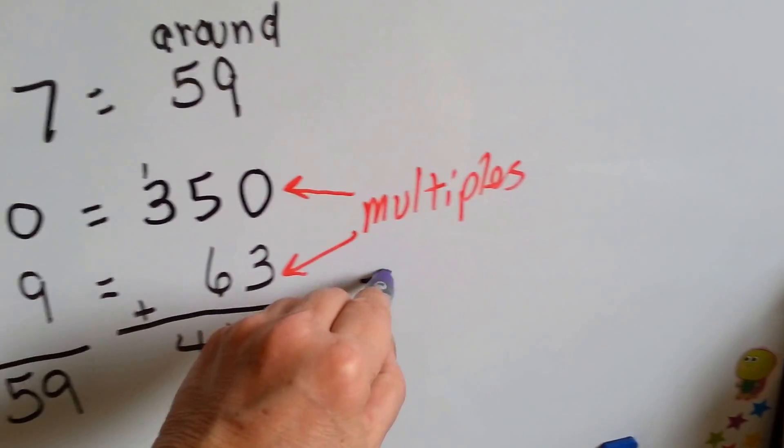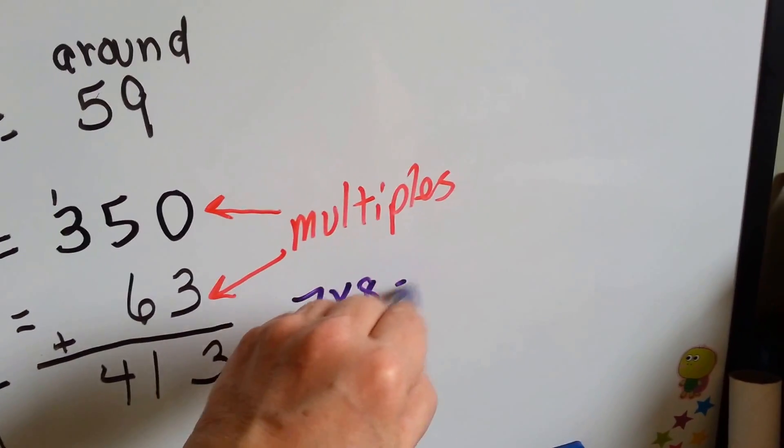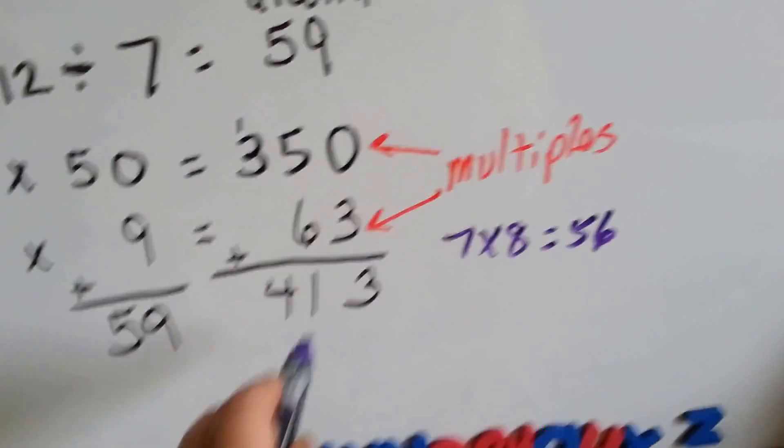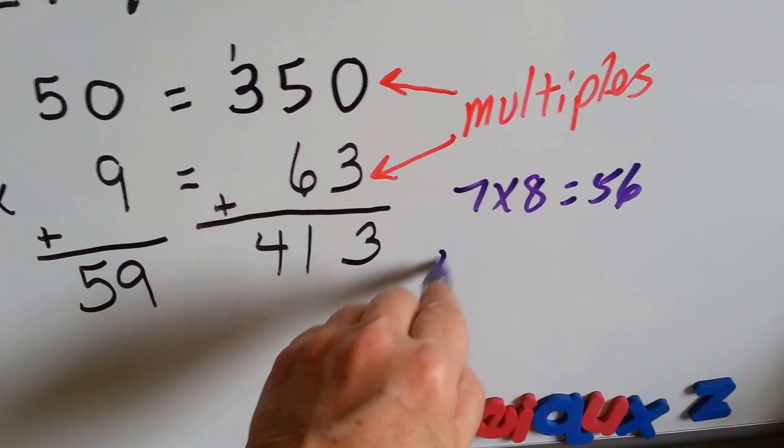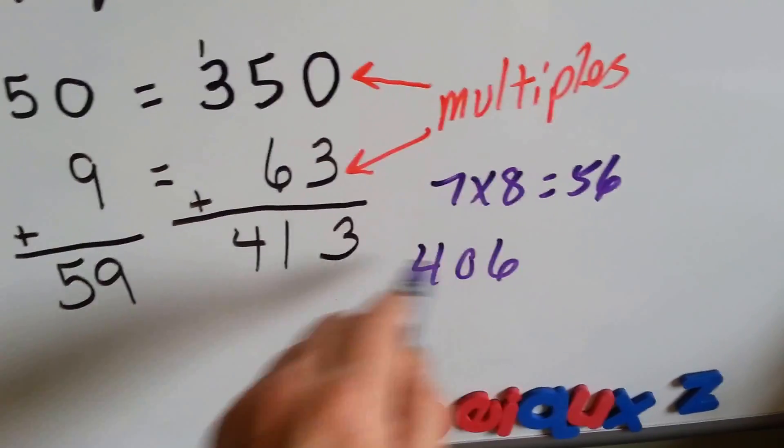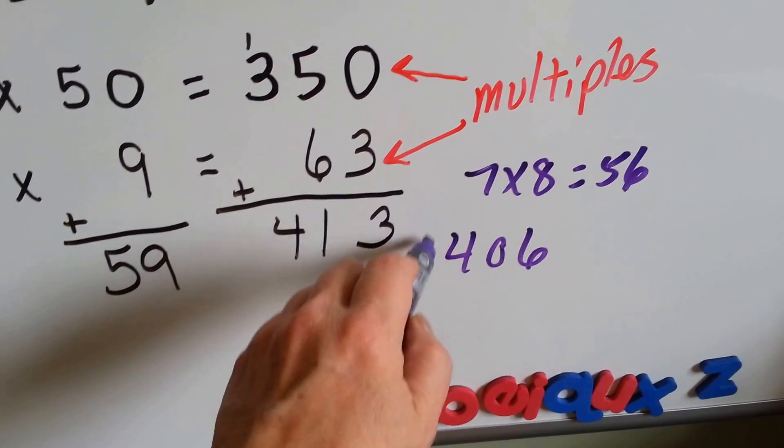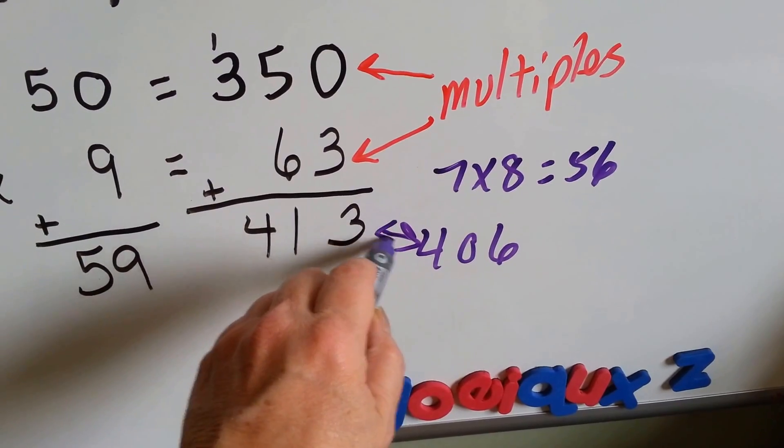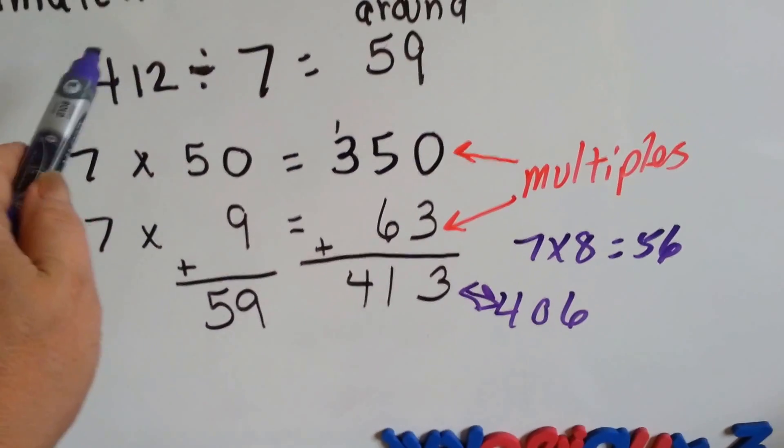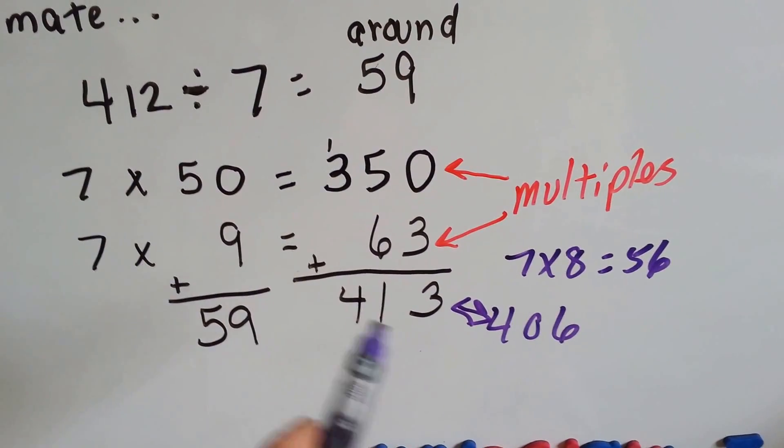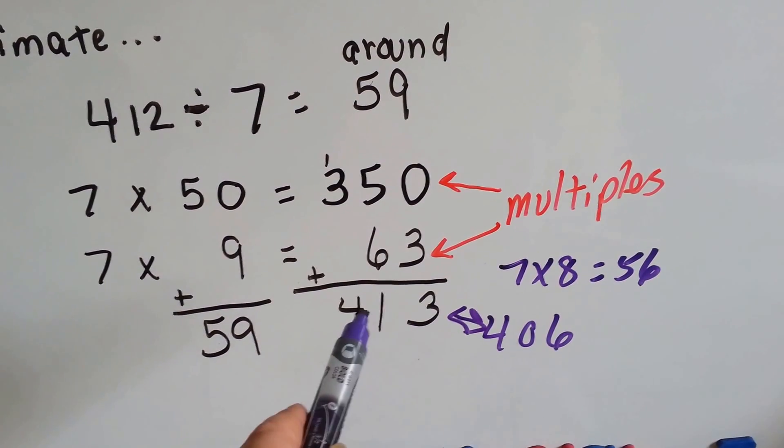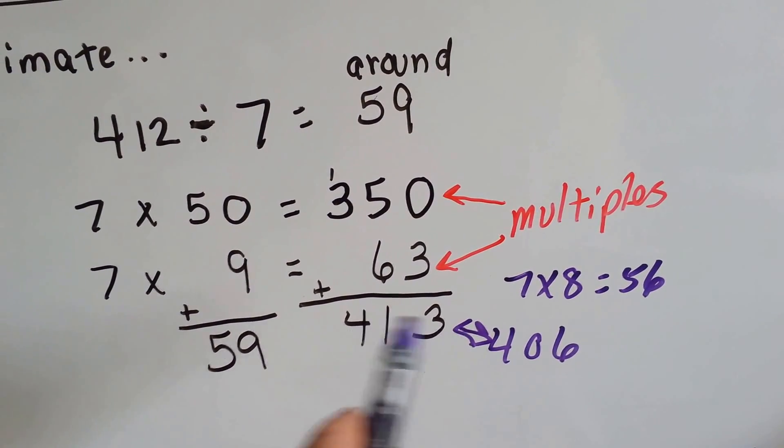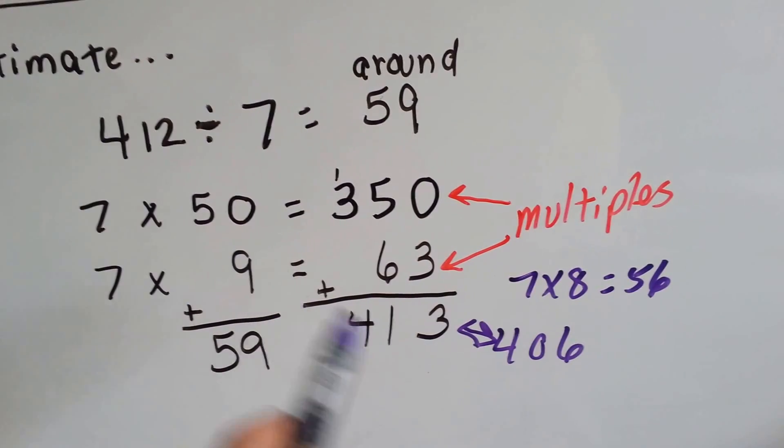Because 7 times 8 is equal to 56. So, that would be 406 then, instead of 413. So, it would be one of these. 412 divided by 7 is somewhere between 406 and 413. The 412.